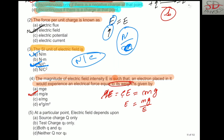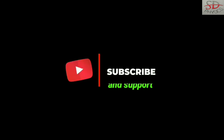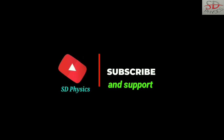Question 5: At a particular point, the electric field depends upon which of the following — source charge Q only, test charge Q₀ only, both Q and Q₀, or neither? At any particular point, the electric field depends only on the source charge Q. So the answer is: source charge Q only.